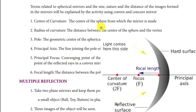The Center of Curvature is the center of the sphere of which the mirror is a part. Next is Radius of Curvature. The center of the sphere gives us the vertex. Next is the Pole, which is the center point of the spherical mirror.